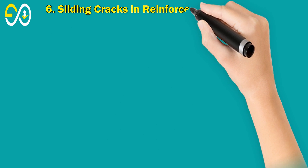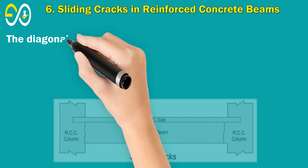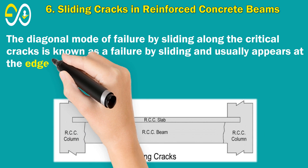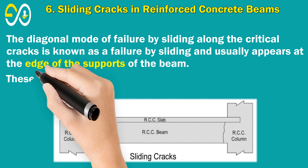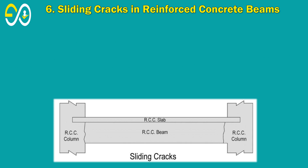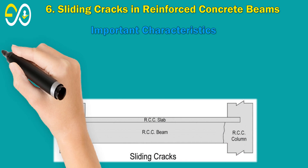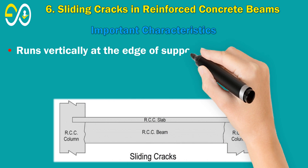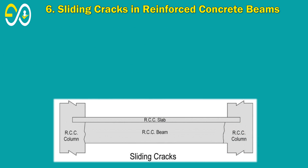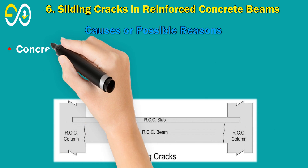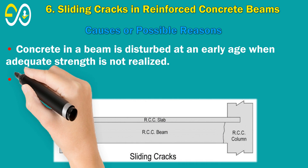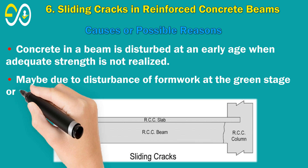6. Sliding Cracks in Reinforced Concrete Beams. The diagonal mode of failure by sliding along critical cracks is known as failure by sliding and usually appears at the edge of the supports of the beam. These types of cracks appear if the concrete gets disturbed in the fresh state. Important Characteristics: Runs vertically at the edge of supports; maximum width at the bottom of the beam. Causes: Concrete in a beam is disturbed at an early age when adequate strength is not realized, possibly due to disturbance of formwork at the green stage or early de-shuttering.